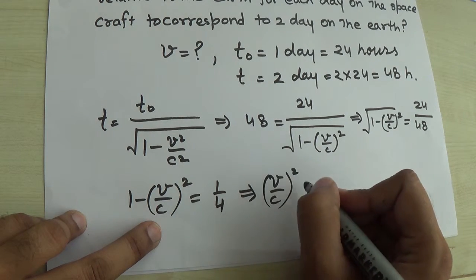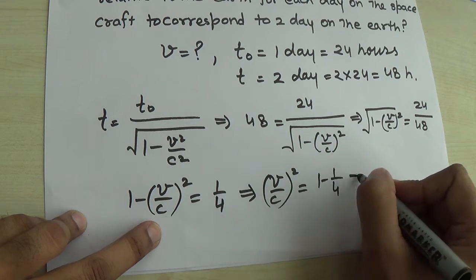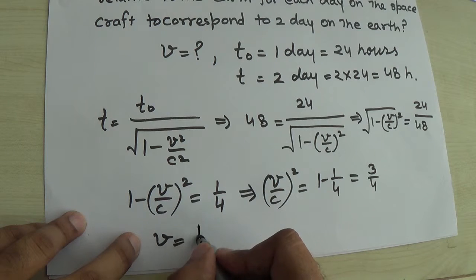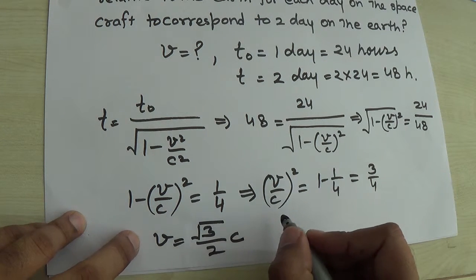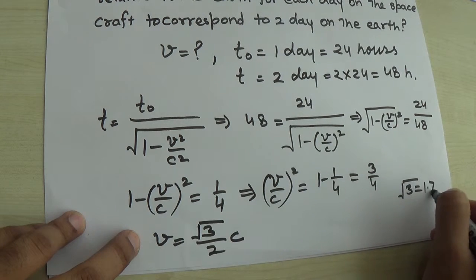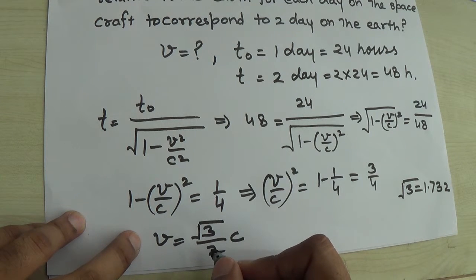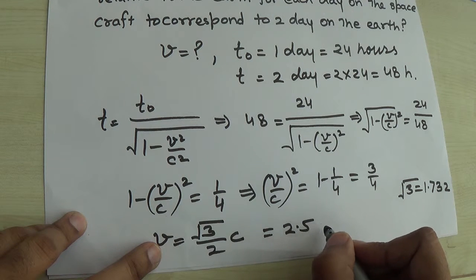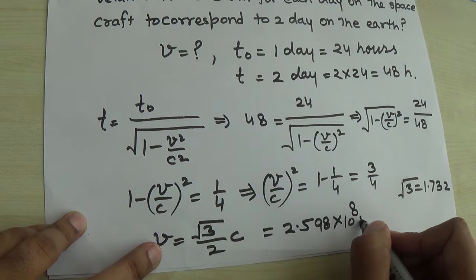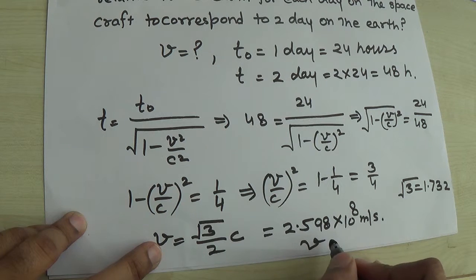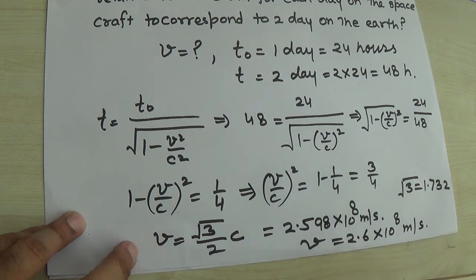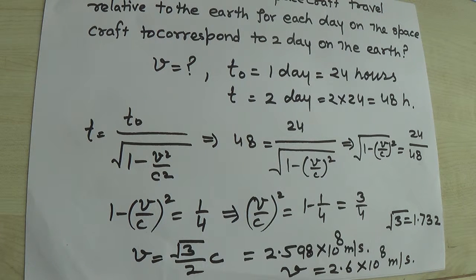Rearranging: (V over C) squared equals 1 minus 1/4, which is 3/4. Therefore V equals (√3 / 2) × C. Since √3 is approximately 1.732, substituting the value of C gives V approximately equal to 2.598 × 10⁸ m/s, or approximately 2.6 × 10⁸ m/s.